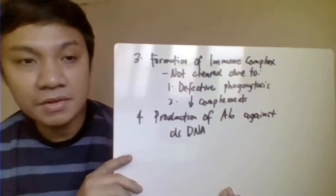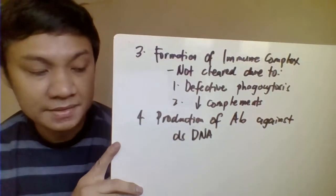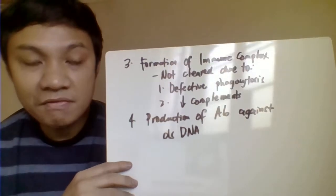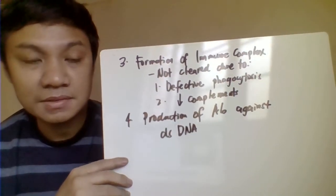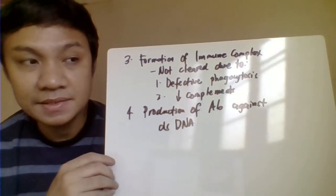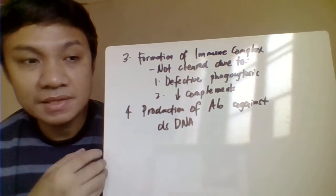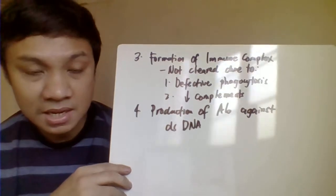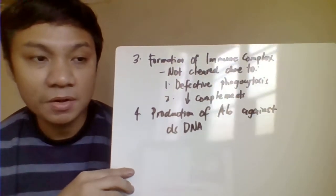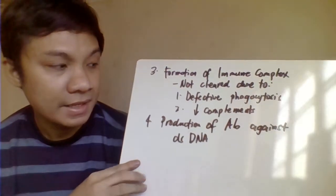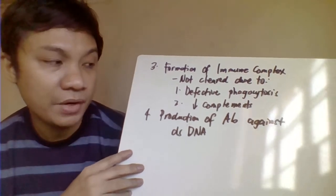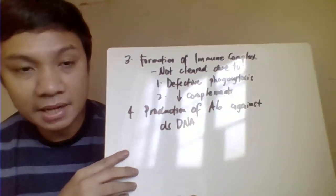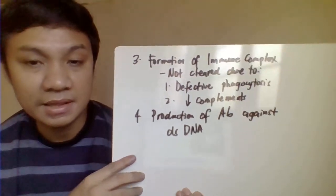Third, immune complex formation that is not cleared from the body due to defective phagocytosis — caused by defects in the IgG Fc receptor and decreased complement components. Lastly, production of antibodies directed against double-stranded DNA is a hallmark feature of SLE.